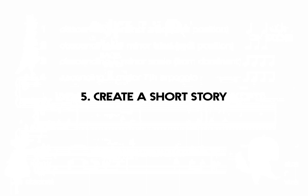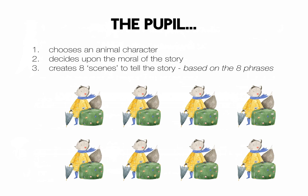Finally, your pupils might create a short story. Going back to the idea of what a fable is, your pupil can choose an animal character, decide upon the moral of the story — that's where some of those YouTube videos might come in useful — and then they create eight different scenes to tell their story. The reason I say eight is it's based on the eight phrases, though you and your pupil might come up with a different number. The idea is that there is a scene per phrase. I hope that's been really useful and I look forward to seeing you really soon.